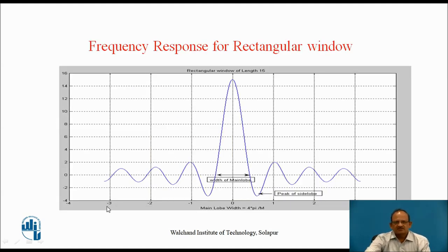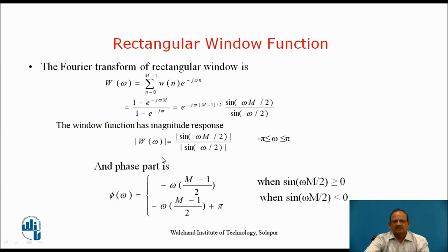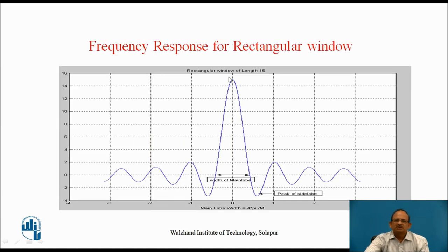If you plot this function, it is a sinc function. This is the frequency response for a rectangular window of length 15 plotted. From the equation, when omega = 0, the magnitude equals M. This is the main lobe, and these are all the side lobes. The main lobe width can be easily obtained from that equation: the main lobe width is equal to 4π/M.